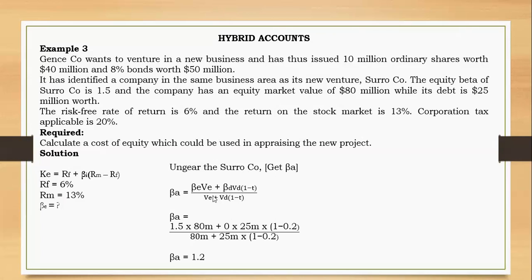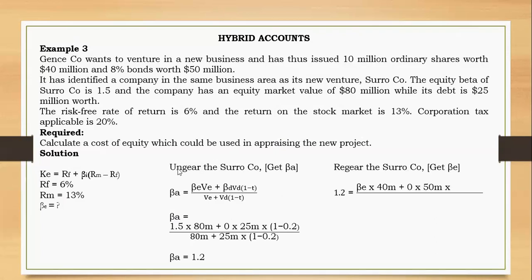Now we have asset beta of 1.2, representing only business risk. Since James's company is entering the same business, this asset beta applies to Jane's company too. We now regear using Jane's capital structure: equity value = 40 million, debt value = 50 million, tax rate = 20%, debt beta = 0. Using the same formula: 1.2 × (40 + 50 × (1 − 0.2)) = equity beta × 40.